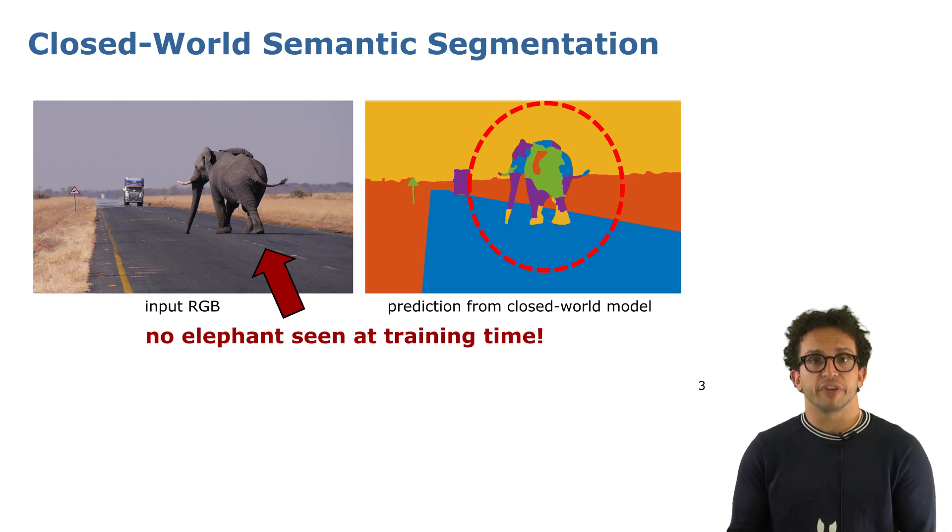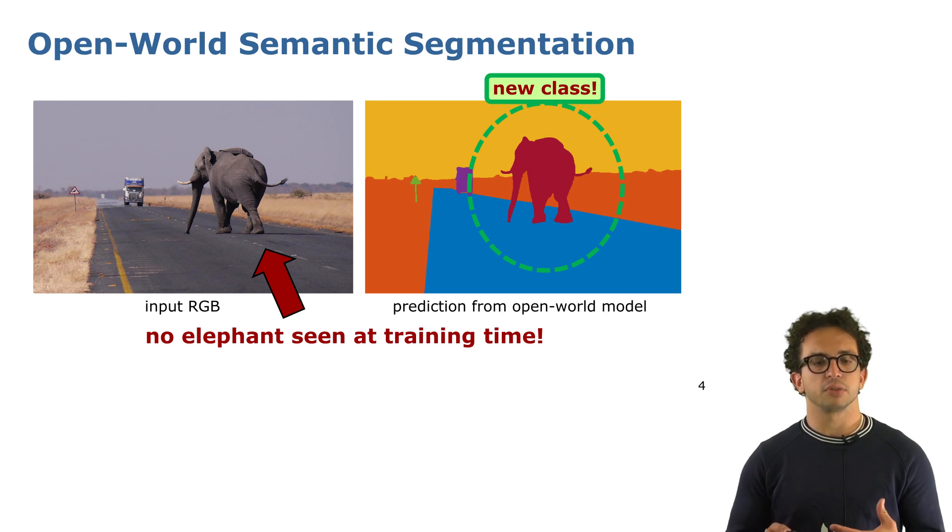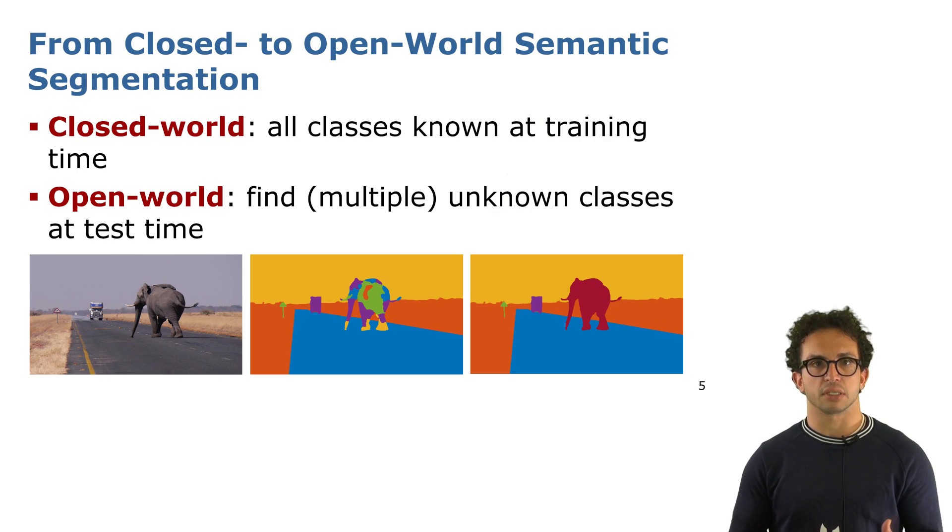We try to overcome this problem and tackle a task called open-world semantic segmentation. The main difference is that in closed-world all classes are known at training time and we do not expect to see anything new at test time, while in open-world we want to find and recognize multiple unknown classes that might appear at test time.